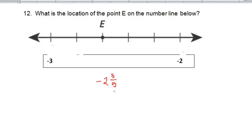Now if we wanted to write it in decimals, we have to know that 1 fifth can be written as 0.2. So 3 fifths would be 0.6. So another way to write this answer would be negative 2.6.